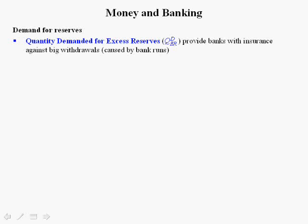Now we're going to go to the process by which the Fed uses to control the money supply. We call the tools at its disposal monetary policy tools. Before we do that, we need to define some things. In blue, we have the quantity demanded for excess reserves, denoted Q superscript D subscript ER. You can think of these excess reserves as insurance against big withdrawals.